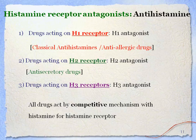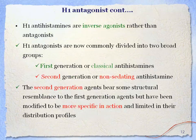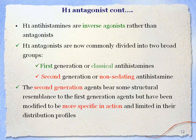H1 blockers are classical antihistamines and are anti-allergic drugs. H2 blockers are called anti-secretory agents. H3 antagonists and all these drugs act by a competitive mechanism with histamine at the histamine receptor. H1 antihistaminics are actually inverse agonists rather than true antagonists, and are broadly classified into two classes: first generation, called classical antihistamines, and second generation, which are non-sedating antihistamines.